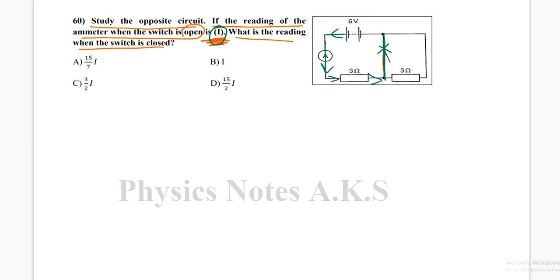So the same current will still flow through the first and second resistors, both of them, and go back to the battery. So the answer is I.